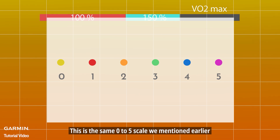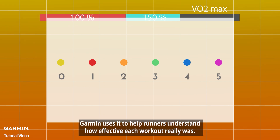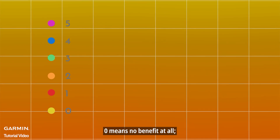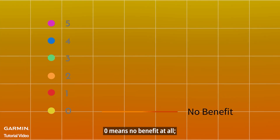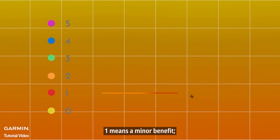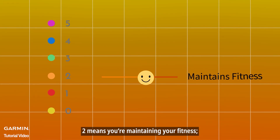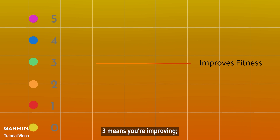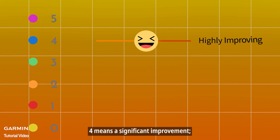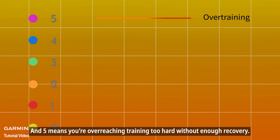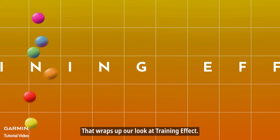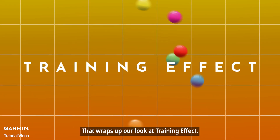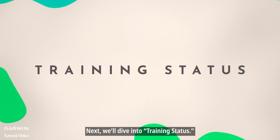This is the same 0 to 5 scale Garmin uses to help runners understand how effective each workout really was. Zero means no benefit at all. One means a minor benefit. Two means you're maintaining your fitness. Three means you're improving. Four means a significant improvement. And five means you're overreaching — training too hard without enough recovery. That wraps up our look at training effect. Next, we'll dive into training status.